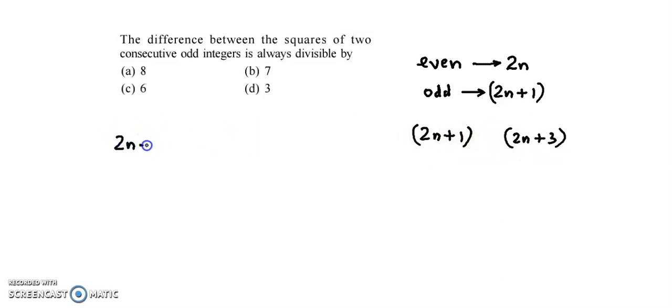That is (2n plus 3) the whole square minus (2n plus 1) the whole square. This difference is always divisible by... Now we use the expansion formula (a plus b) the whole square, and we have a square plus 2ab plus b square. Applying this formula here, so we have 4n square plus 12n plus 9 minus again expanding this, so we have 4n square plus 4n plus 1.